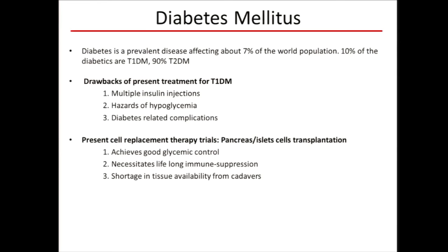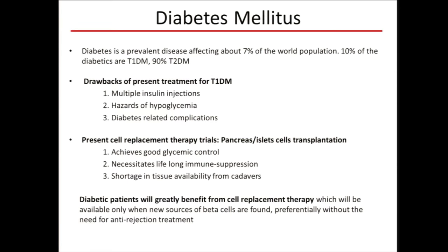About 40% of type 2 diabetic patients and all type 1 diabetic patients are treated by insulin injections — which are no fun — in addition to hazards of hypoglycemia and all diabetes-related complications. Another option is pancreas or islet cell transplantation, which maintains normal continuous glycemia. However, it necessitates lifelong immune suppression, and there is a shortage of tissue availability because one typically needs pancreatic islets from 2 to 3 cadaveric donors to treat one diabetic patient.